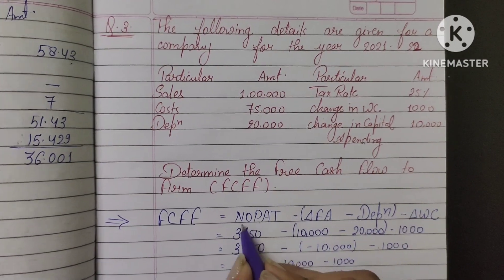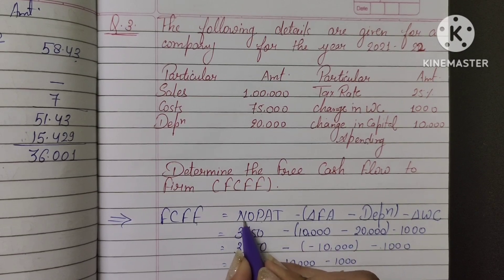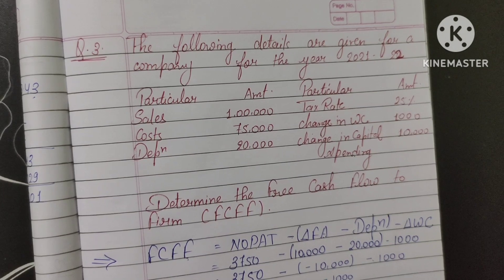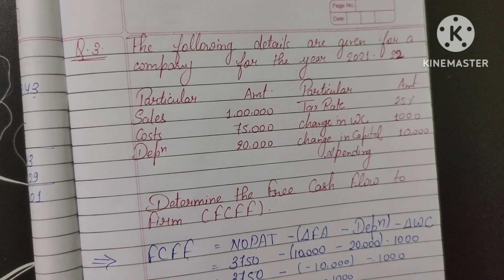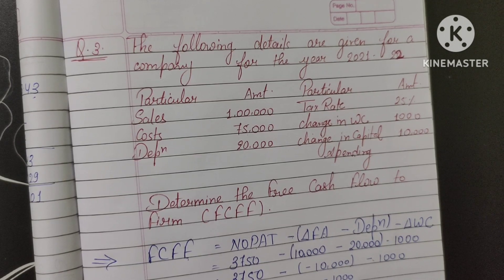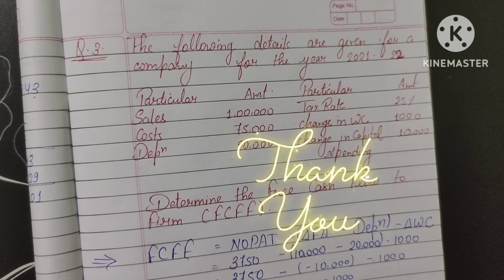I hope this is clear. When calculating FCFF, the formula is NOPAT minus change in fixed assets, depreciation, and change in working capital — put it in brackets carefully. We've solved three questions on the DCF method. In upcoming videos we will solve more questions on discounted cash flow and other valuation methods. Since face-to-face interaction isn't possible, please reply through comments so I can understand whether you are getting the concepts. Thank you so much for watching till the end and giving your precious time.